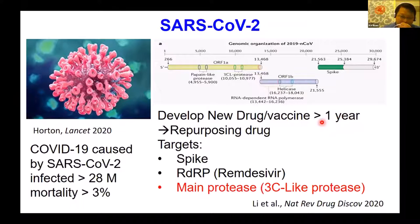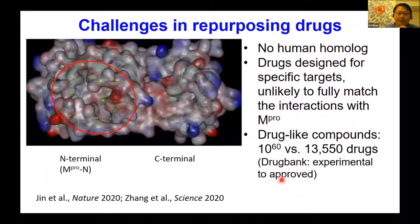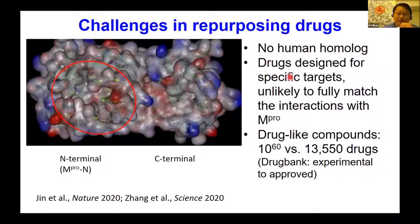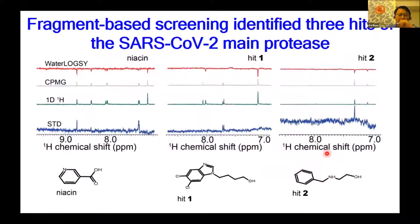Developing a new drug or even a vaccine takes over years or even ten years, so a feasible approach is to repurpose drugs or candidates already in clinical trials. The main protease is a viable target. The advantage of repurposing drugs against the main protease is that it has no human homology. However, repurposing drugs are designed for specific targets and are unlikely to fully match interactions with the main protease. Considering that chemical space is 10^60 but available drugs number only about 10^4, a fragment-based approach could be a better way.